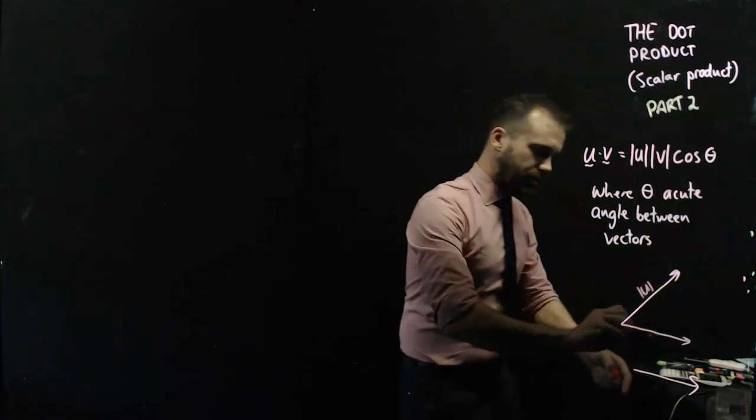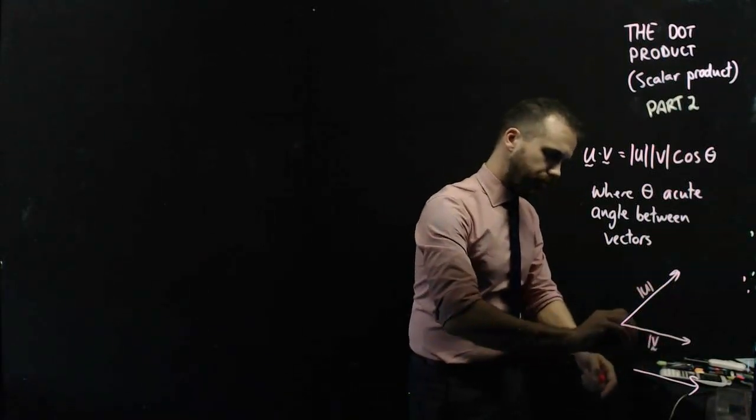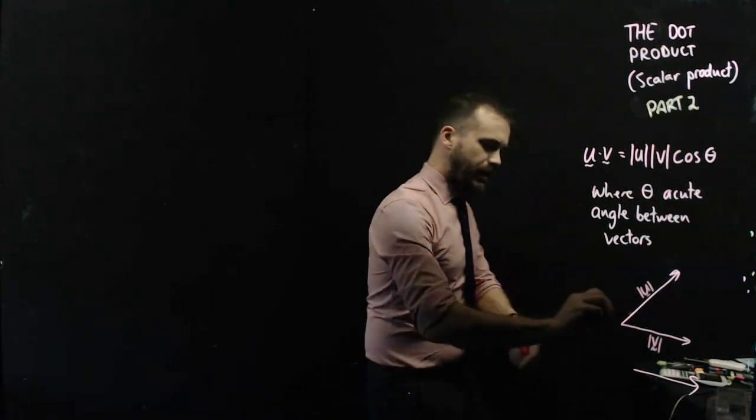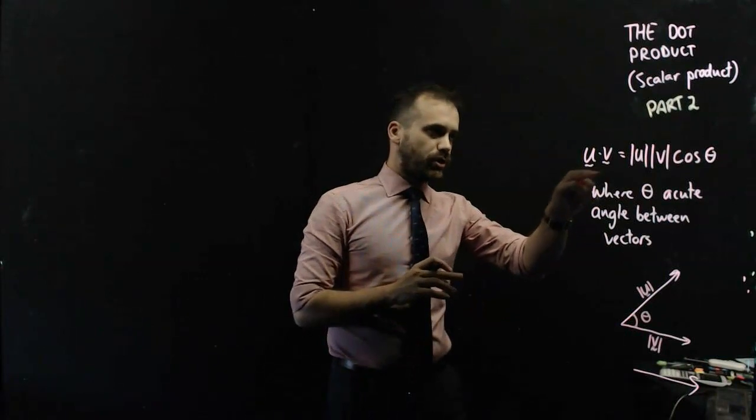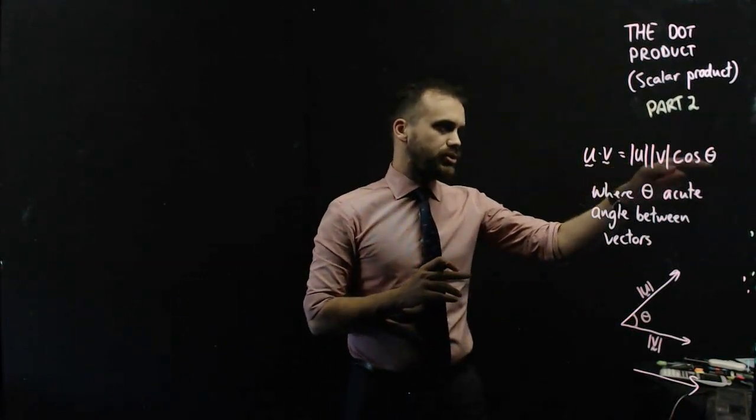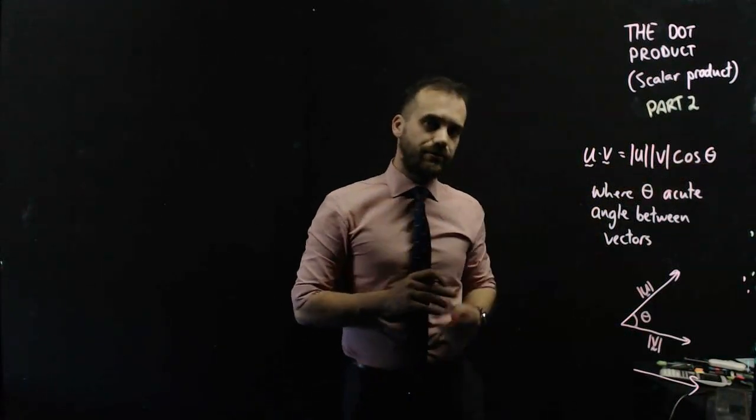the length of that one, and the length of that one, and then the acute angle between them, we can find the dot product. Magnitude times magnitude times cos the angle between them.